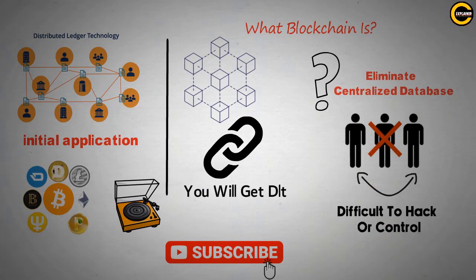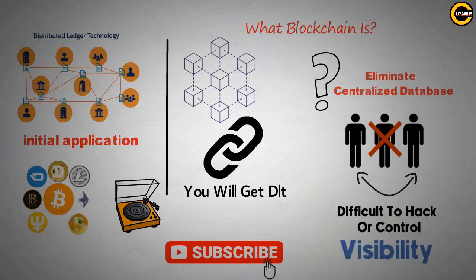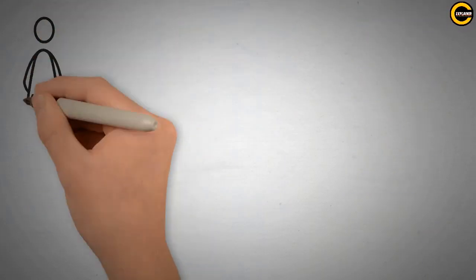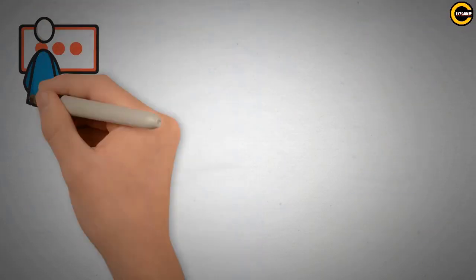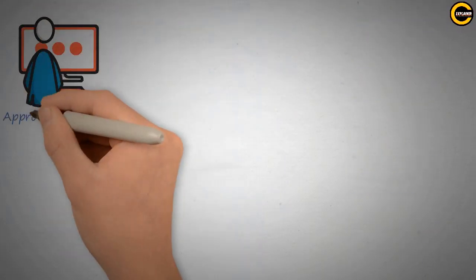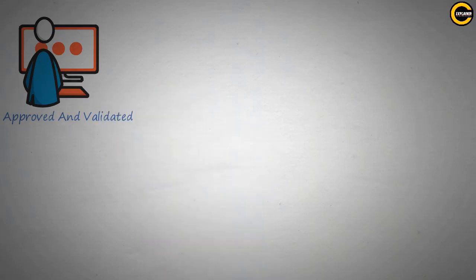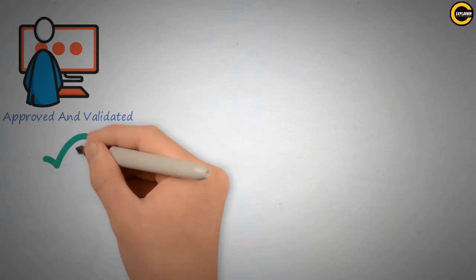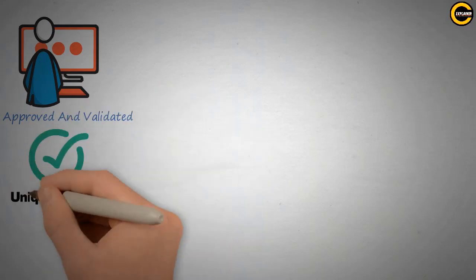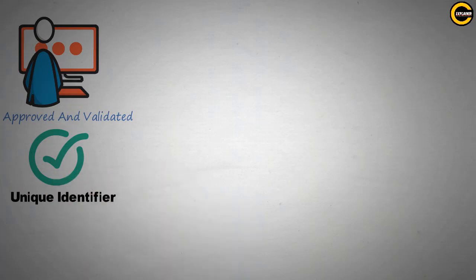This also allows for a transparent network where each of the participants have visibility. In order for you to store information onto the blockchain, the information must first be approved and validated by all participants. Once the information is approved, a unique identifier known as the hash is produced.